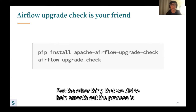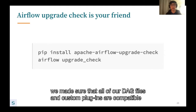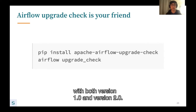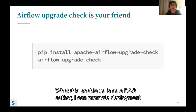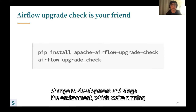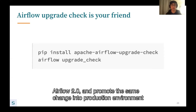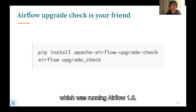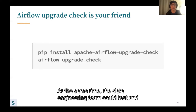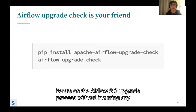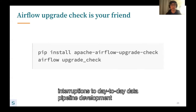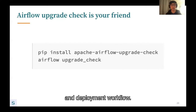The other thing we did to smooth out the process was to make sure all of our DAG files and custom plugins are compatible with both version 1 and version 2. This enabled us as DAG authors to promote deployment changes to development and staging environments running Airflow 2.0, and promote the same change into production running Airflow 1.0 — while the data engineering team iterated on the upgrade process without incurring any interruptions to day-to-day pipeline development.